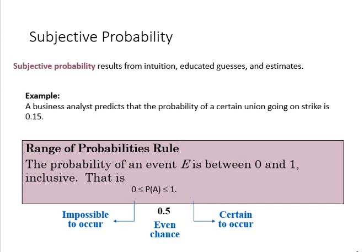So a range of probabilities rule, which is the range of possibilities when it comes to a probability, is that it ranges from 0 to 1, where 0 is it's impossible, and 1 is it's completely certain.